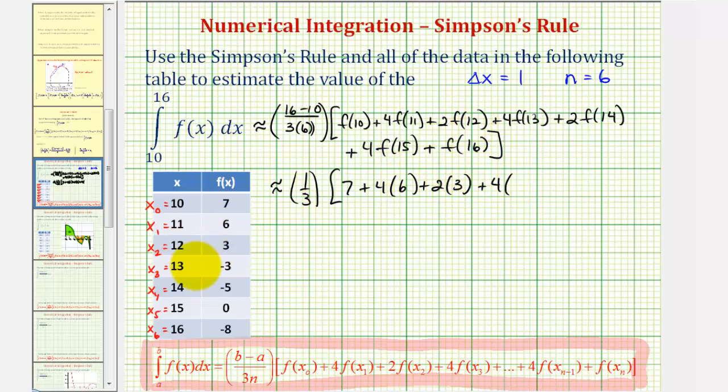Plus four times f of thirteen, which is negative three, plus two times f of fourteen, which is negative five, plus four times f of fifteen which is zero, plus f of sixteen which is negative eight.